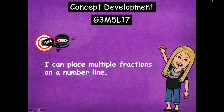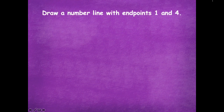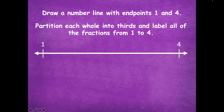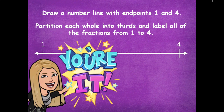So that means some, maybe just not all today. The materials that you need for this lesson are just your dry erase board, so make sure you grab that before we get started. We're going to draw a number line with endpoints of one and four, partition each whole into thirds, and label all of the fractions from one to four. This is what we did in our previous lesson — pause the video, draw your number line with endpoints between one and four, label the missing wholes, partition into thirds, then label those fractions, and click play when you're ready.